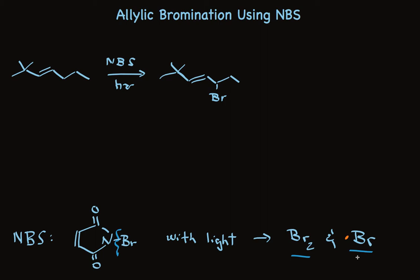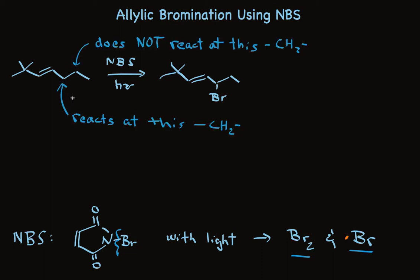You could already guess that the reaction at the allylic position is initiated by reaction with a bromine radical. Now we notice right away that there are two CH₂ positions in the molecule where the bromine radical could react. The allylic position is selectively reactive, and we don't see reaction at the other CH₂ position — the reaction is so much slower there that we see no product.